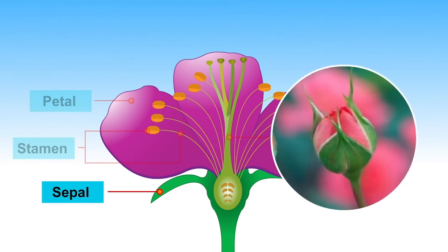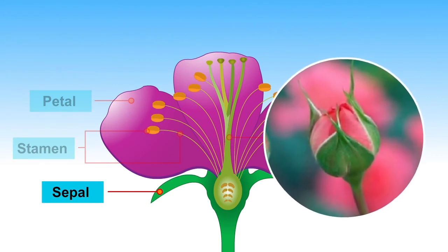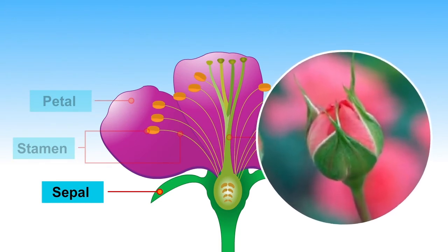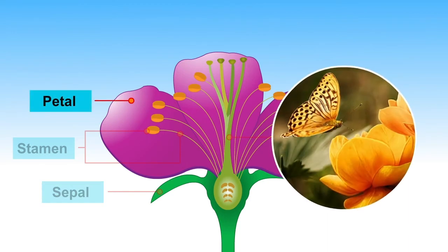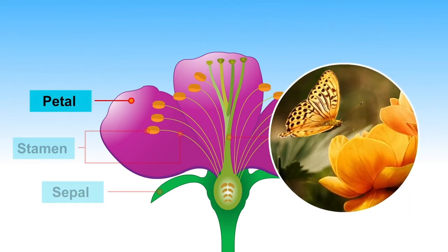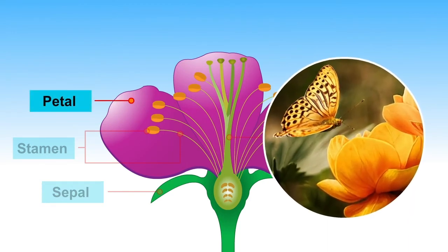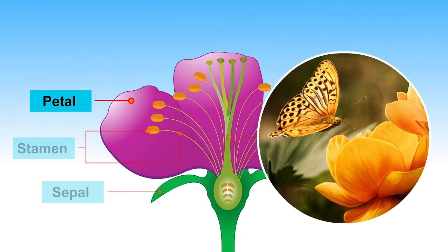Sepals are the outer covering which protects the flower when in bud. Petals are the bright colored modified leaves. They attract bees and butterflies.